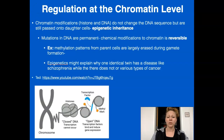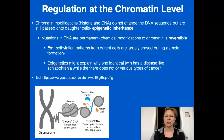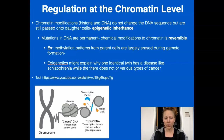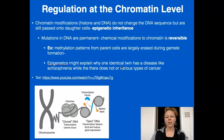Generally, these methyl groups and chemical modifications, once you create an egg or a sperm cell, are going to not be passed on — they're sort of wiped clean. This epigenetic inheritance is not passed on completely; some are, such as genes for thrifty metabolisms. But generally, it is wiped clean when the sperm or egg is delivered to the offspring. The methylation patterns from parent cells are largely erased during gamete formation. Epigenetics might explain why one identical twin has a disease like schizophrenia while the other does not, and the same is true with various types of cancer.